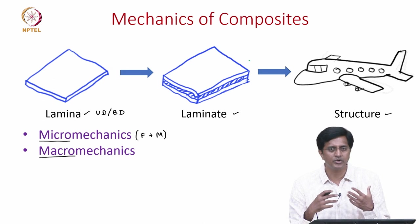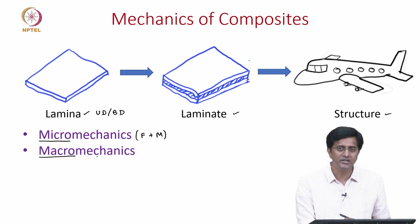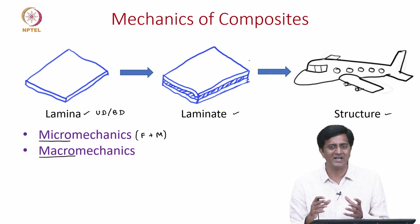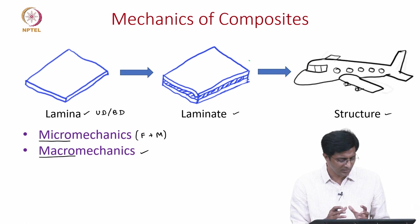Though it is good to be able to predict the effective properties of a lamina, for us to go forward it is good to have these effective properties. In the macro mechanics we are assuming that the lamina is a homogeneous material which has some effective properties. Once we know these effective properties, how do we see the relations between the stresses and the strains — that is what we will discuss in the macro mechanics of lamina.